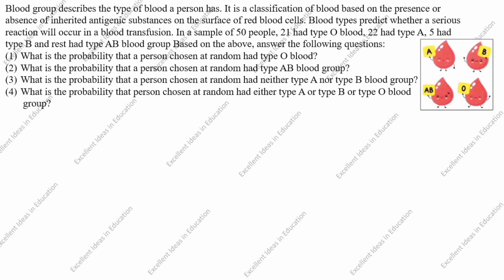Hi students, welcome to my channel Excellent Ideas in Education. Today we are going to solve this case study probability problem. Blood group describes the type of blood a person has. It is a classification of blood based on the presence or absence of antigenic substances on the surface of red blood cells. Blood types predict whether a serious reaction will occur in a blood transfusion.